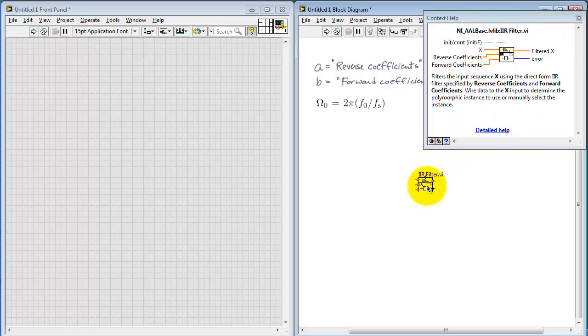Check the help on this one. We see that we have the incoming signal to be filtered, and then the output. We have the reverse coefficients and the forward coefficients.